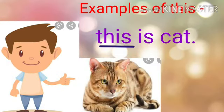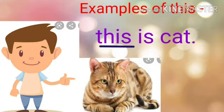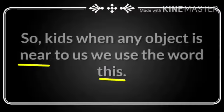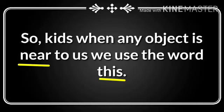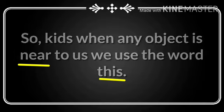One more example: 'This is a cat.' As you can see the cat is near to the boy, that's why we have used the word 'this' here. So kids, when any object is near to us we use the word 'this'.